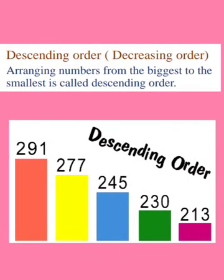Descending order means arranging numbers from the biggest to the smallest. Here is one example: 291 is bigger than 277, 277 is bigger than 245, 245 is bigger than 230, and 230 is bigger than 213. So these numbers are arranged in descending order — that is, from the biggest to the smallest.